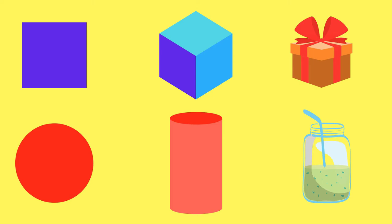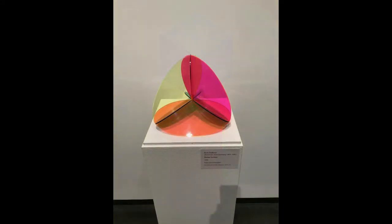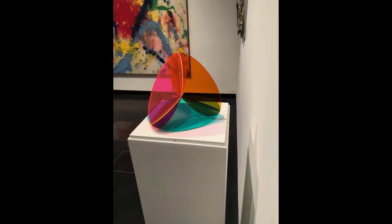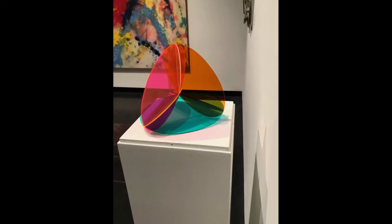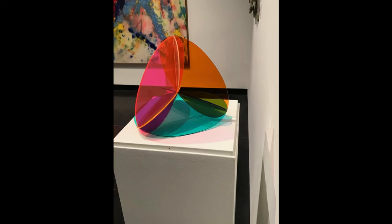They are the 3D versions of their 2D counterparts. Artists can create visual depictions of geometric forms to create objects that have the illusion of space in 2D design like drawing and painting. In sculpture, like Ruth's sculpture Steiner's surface, the forms take up space and have volume and mass. Ruth used shapes that intersect each other to create a 3D form.